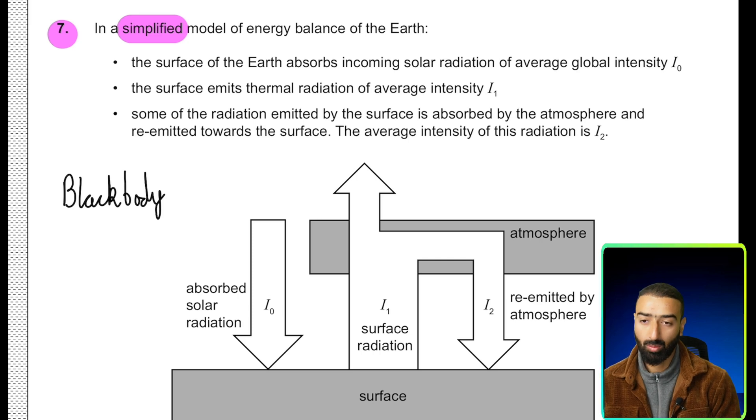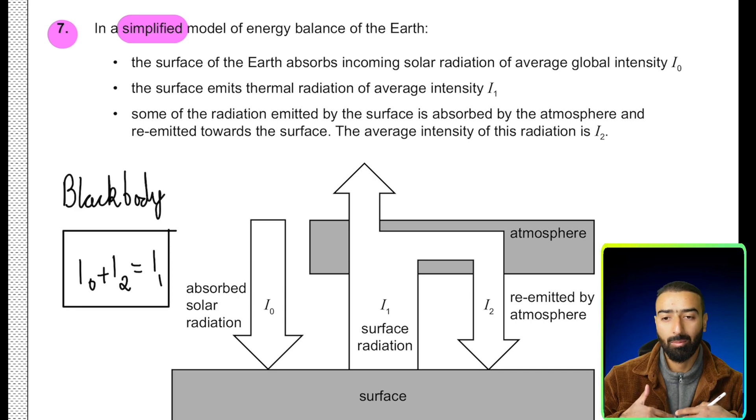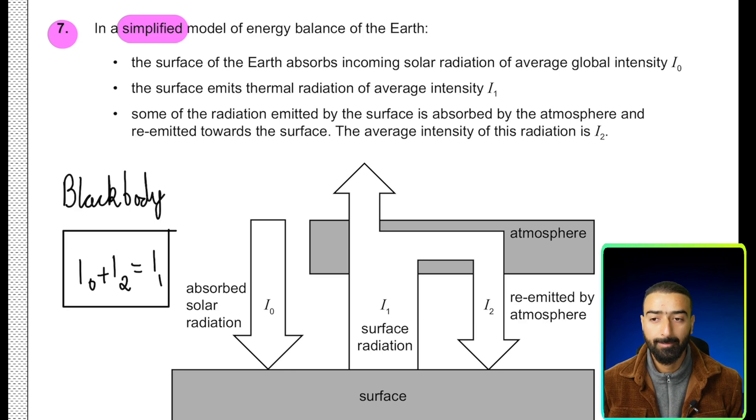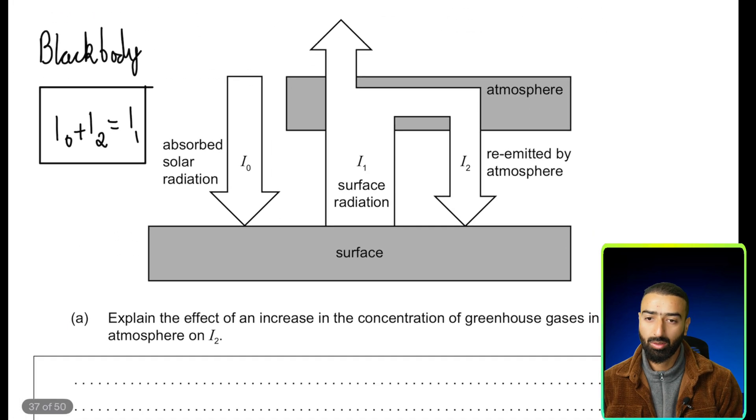All right, we can also write a quick equation here. That's I0 plus I2 must equal I1. The amount of energy that's incident and absorbed by Earth must be equal to the amount of energy that's emitted outwards. Why should that be true? That is true because the Earth is at a constant temperature. It's at thermal equilibrium. If I0 and I2 were greater than I1, it would mean the Earth has a net gain of thermal energy. That would increase its temperature. Since that's not the case, the Earth is at a constant average temperature. We can assume this equation to hold true. Let's have a look at the question.